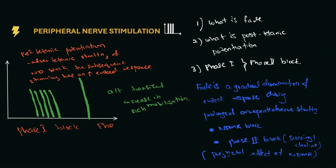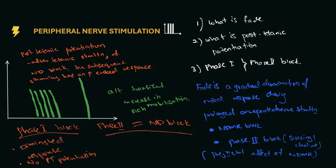Now go on to the difference between phase one and phase two block. Phase one happens when you give succinylcholine. There'll be diminished responses and there'll be no post-tetanic potentiation. Phase two block is when you give a larger dose of succinylcholine or prolonged infusion. It is exactly the same as non-depolarizing block where you will observe fade and there is also post-tetanic potentiation.